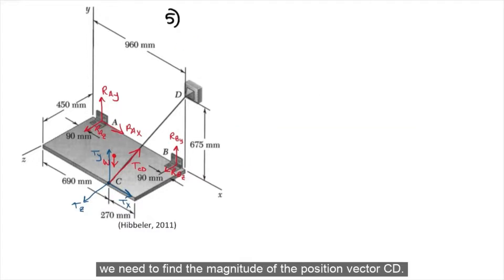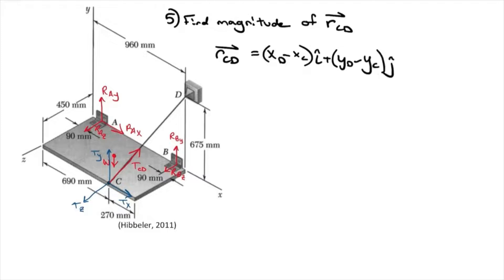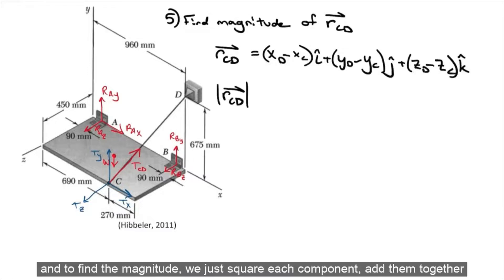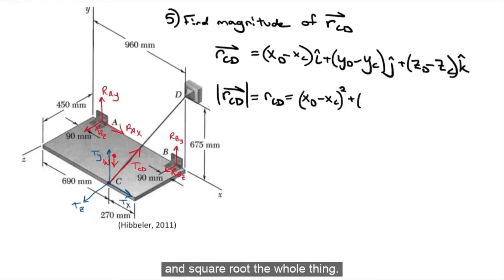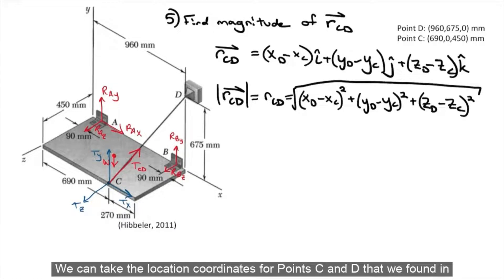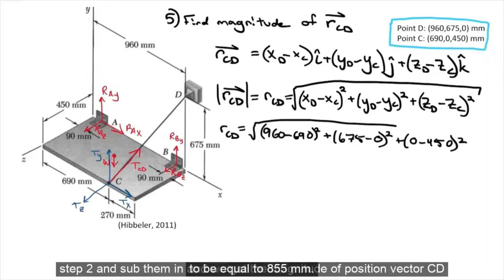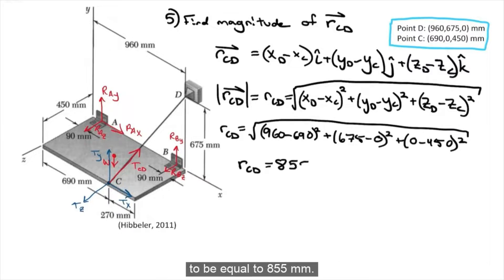In the fifth step, we need to find the magnitude of the position vector CD. The position vector CD can be found using this equation, and to find the magnitude, we square each component, add them together, and square root the whole thing. Using the location coordinates for points C and D found in step 2, we get the magnitude of position vector CD equal to 855 mm.